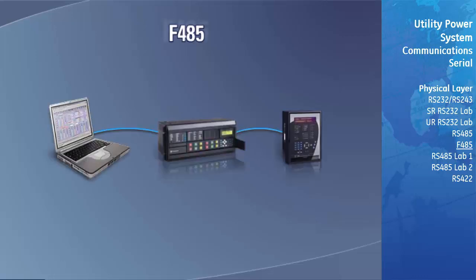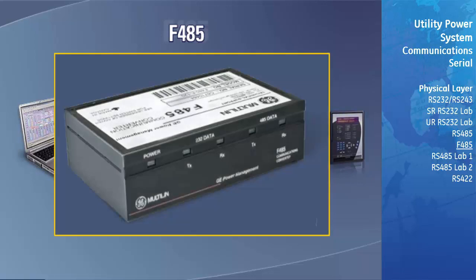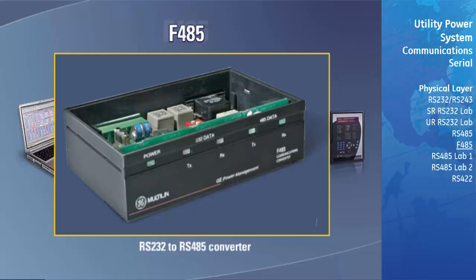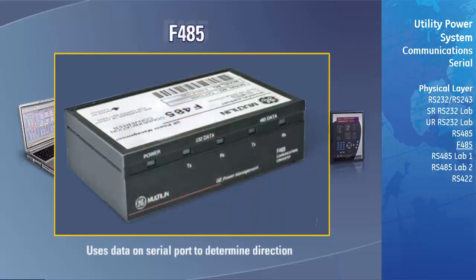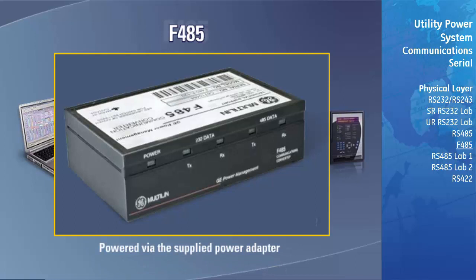The GE Multilin F-485 is a self-contained device for the conversion of signals between RS-232, RS-485, and fiber optic LANs. The conversion type and baud rate are configured via DIP switches. The F-485 converter uses the data on the serial port to determine direction, and therefore requires no hardware handshaking signals from the computer. The F-485 converter can be powered via the supplied power adapter, or by the connection of an external isolated 9-volt AC/DC power supply to the power supply terminals at the back of the case.